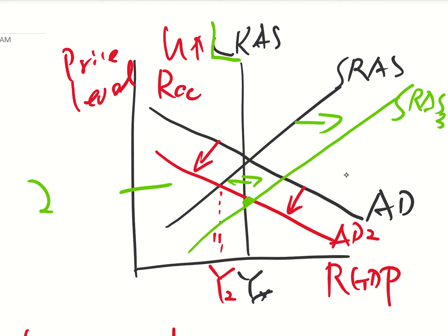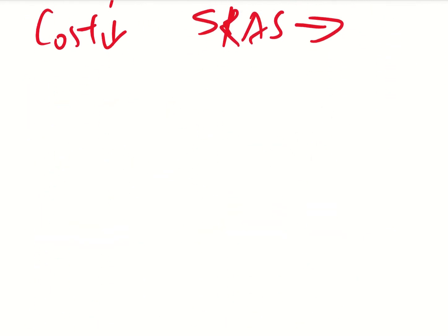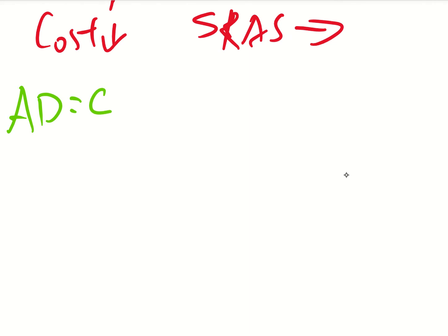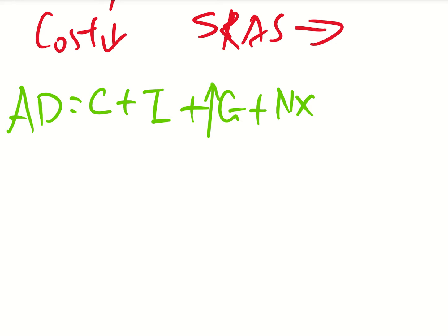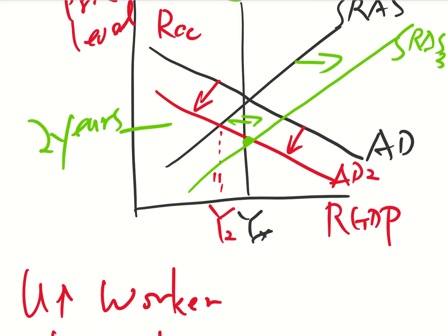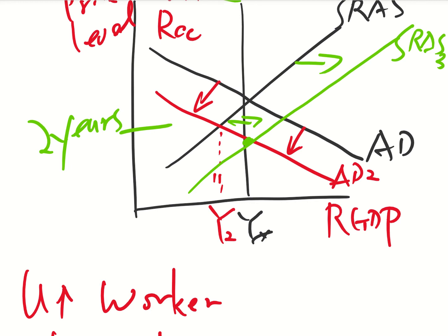The problem with this self-adjustment is that it takes a long time — imagine this entire process takes two years. Somebody will be unemployed for two years, and the economy will slow down for two years. We don't like that, so we want this process to be faster. That's why fiscal policy comes in: with fiscal policy, we can make the process faster and push the economy back to where it was before. Our AD curve has four components: consumption, investment, government spending, and net export. If government spending increases, that will increase aggregate demand, shifting the AD curve to the right.